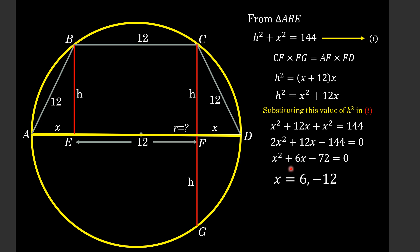among which one is 6 and the other is -12. Since x is length and length can never be negative, the value of x which is -12 is not a valid value.